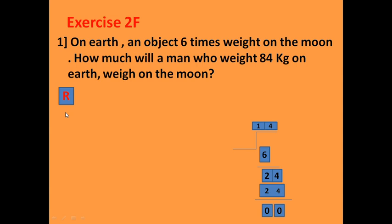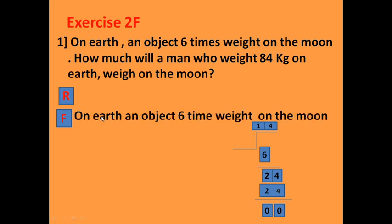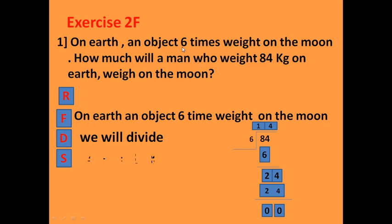We write and find the information. First information: on earth an object weighs six times its weight on the moon. So if my weight on earth is 84 kg, what is my weight on the moon? We decide to divide. So we will divide 84 divided by 6.